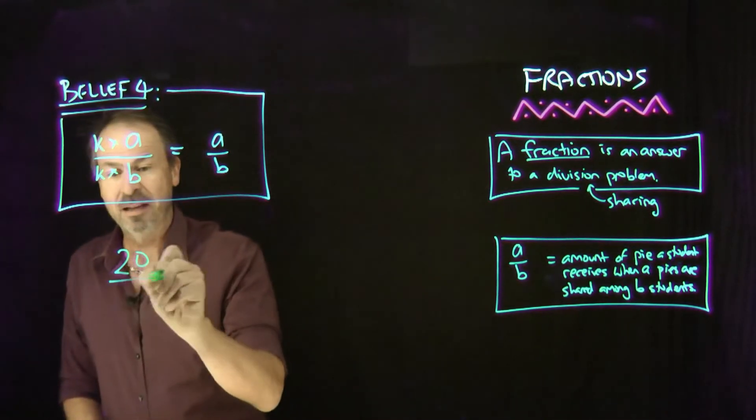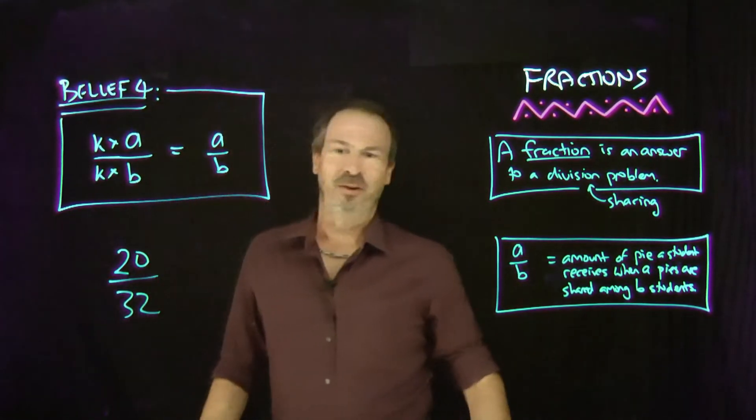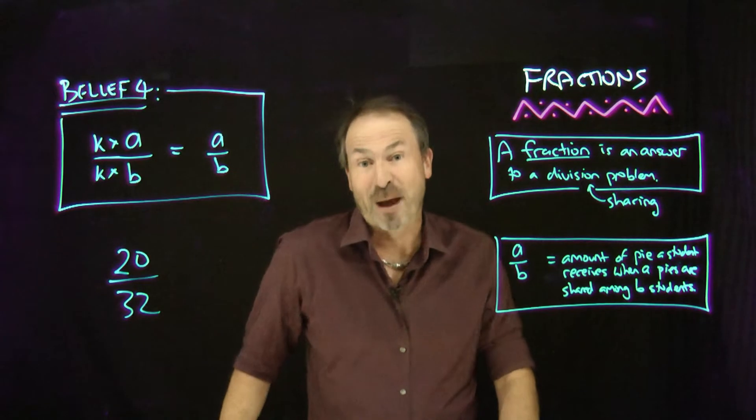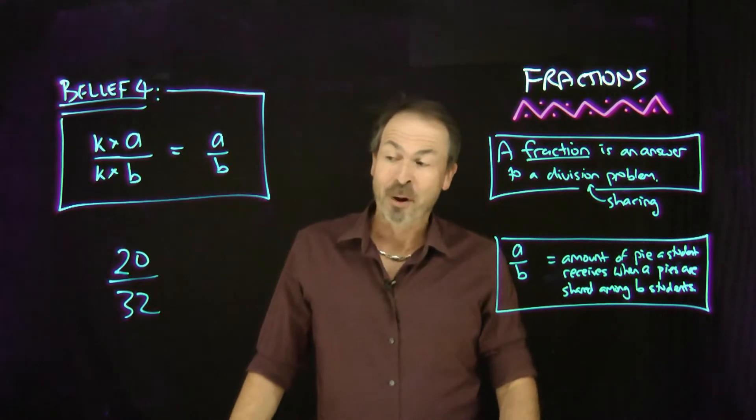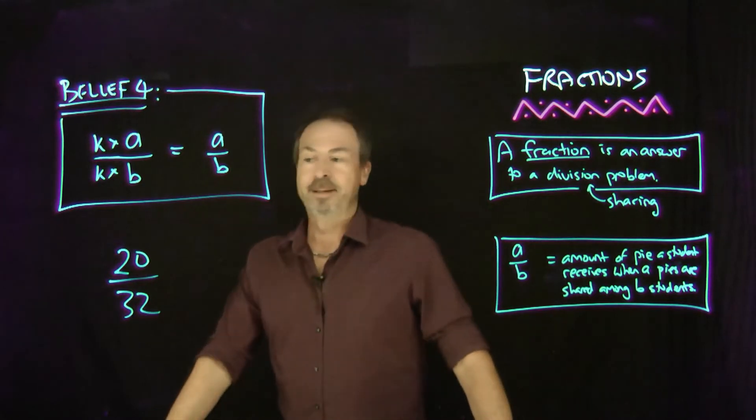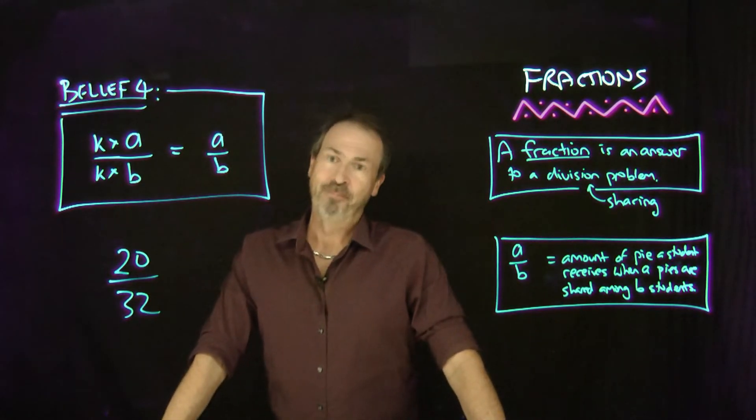Like what? Like this fraction: 20 thirty-seconds, 20 pies for 32 students. That will give some fractional amount of pie to each student. But people often say, please make that fraction look simpler. And you stare at that for a while and say, hmm, okay, all right, what can I do?